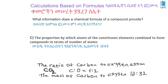For carbon dioxide, the carbon-to-oxygen mass ratio can be determined. Carbon has a molar mass of 12 grams per mole, and oxygen has a molar mass of 16 grams per mole. This gives us the mass-to-mass ratio of carbon to oxygen in carbon dioxide.